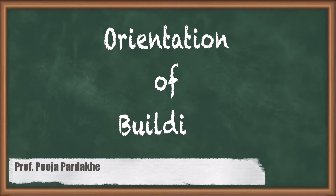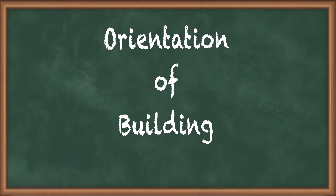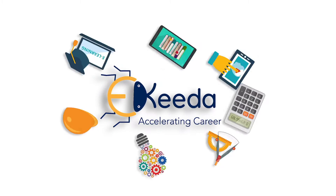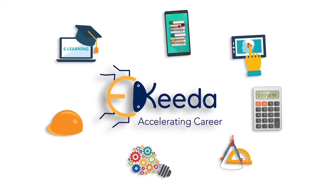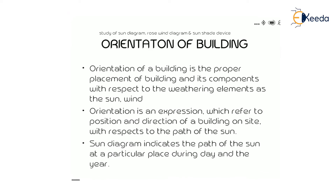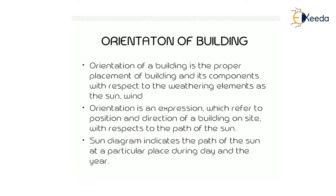In this video we see the topic orientation of building. Orientation of a building is the proper placement of a building and its components with respect to the weathering elements such as the sun and wind. It means that according to the sun and wind direction, the orientation of the building is determined.